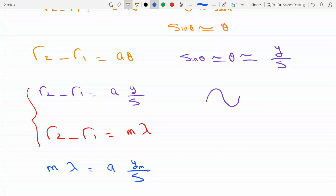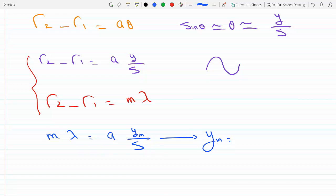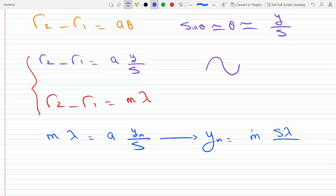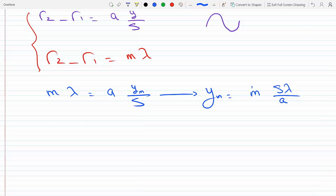So from these two equations, I see that m lambda has to equal a y over s. So y_m for that specific m, because there's many central minimums and maxes, then y_m will equal m s lambda over a.